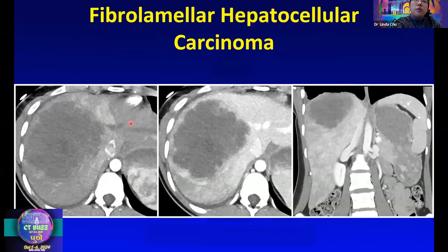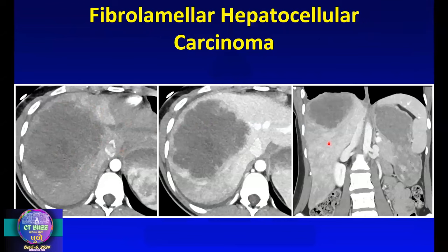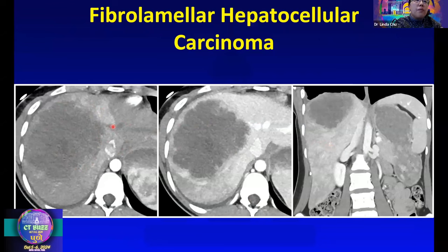Here is another example of fibrolamellar HCC. This case is more hypo-enhancing rather than hyperenhancing, and it doesn't quite have a central scar, so it would be very hard to call this fibrolamellar HCC with confidence. However, going back to the decision of benign versus malignant, this mass has heterogeneous enhancement and scalloped borders, indicating aggressive features — so I would go down the malignant path right away.